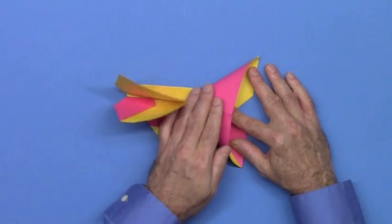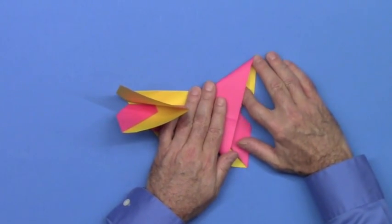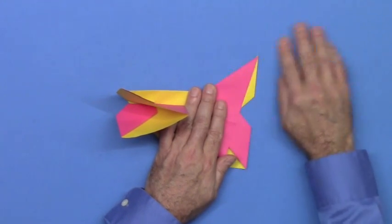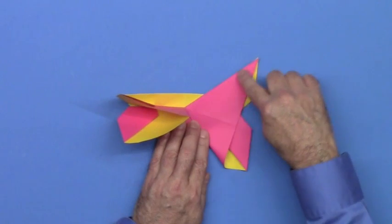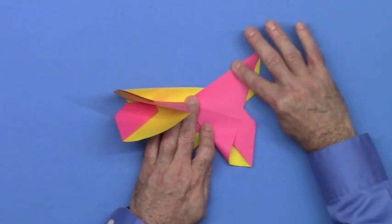I'm going to pull the paper downward from the top corner so that I can form a folded edge that goes from the center of the paper to the top. That's going to be the leading edge of the forewing.